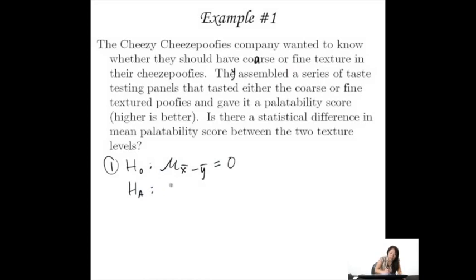And so the mu sub x bar minus y bar should equal zero. And the alternative is that they are different from each other in some way. We don't know which one tastes better. I mean, you could if you eyeballed that data a little bit. But for the most part, let's just be neutral and say, we don't know whether the coarse Cheesy Poofies are better than the fine or if the fine Cheesy Poofies are better than the coarse.